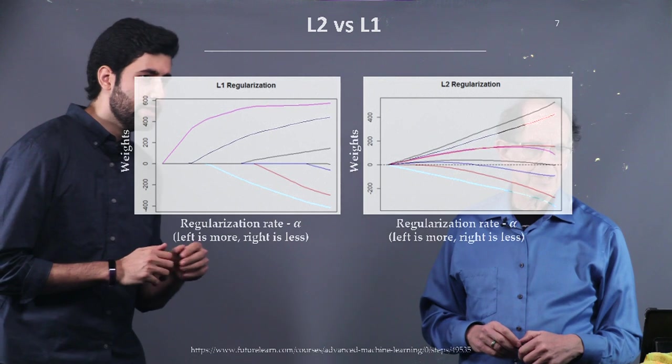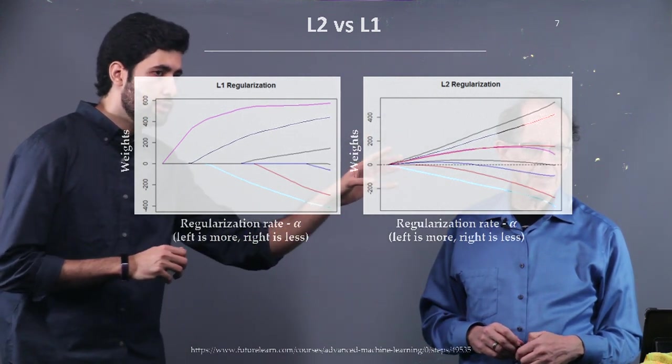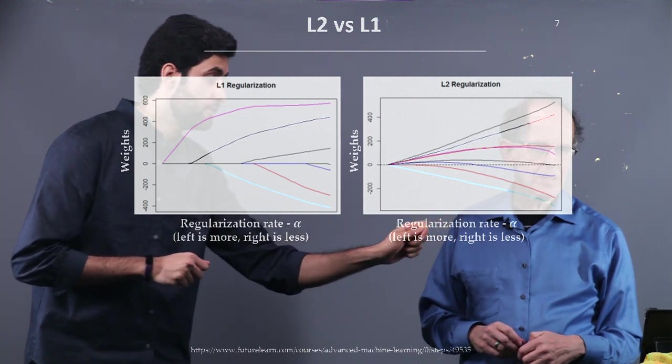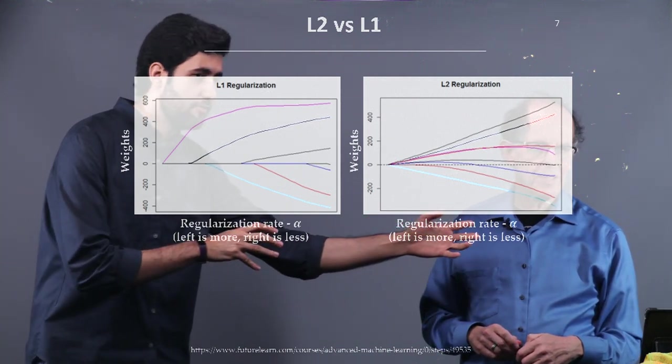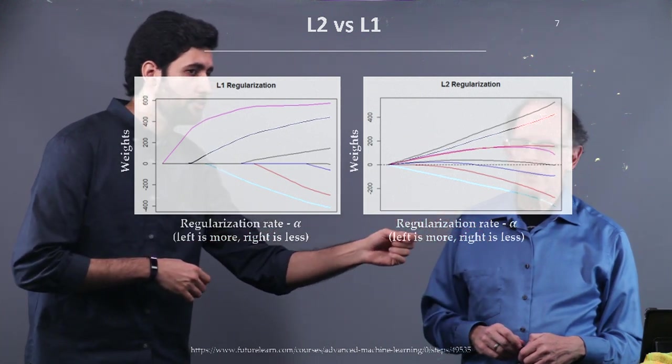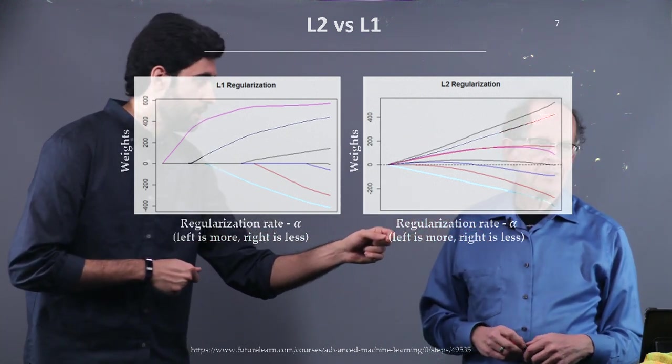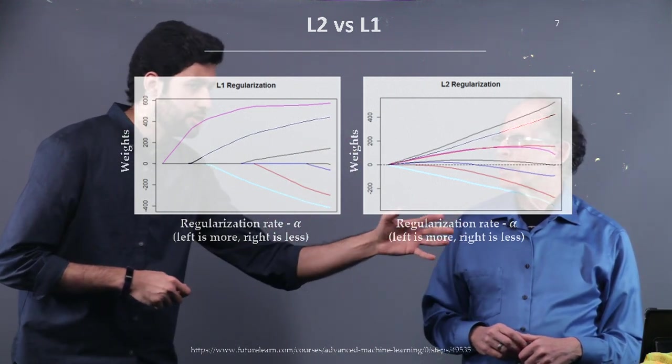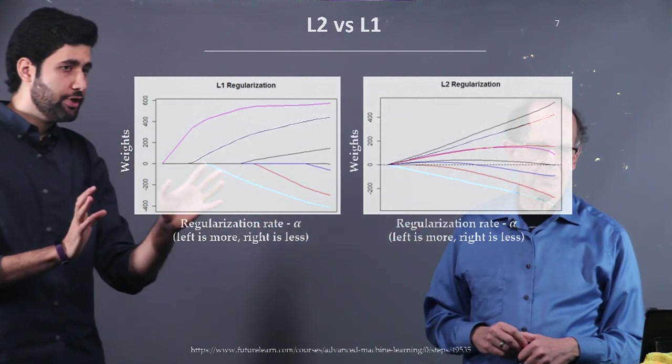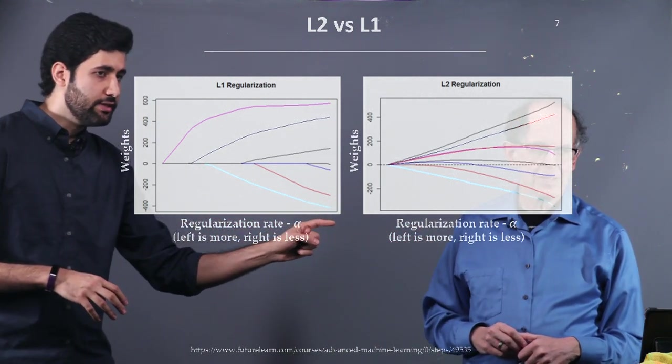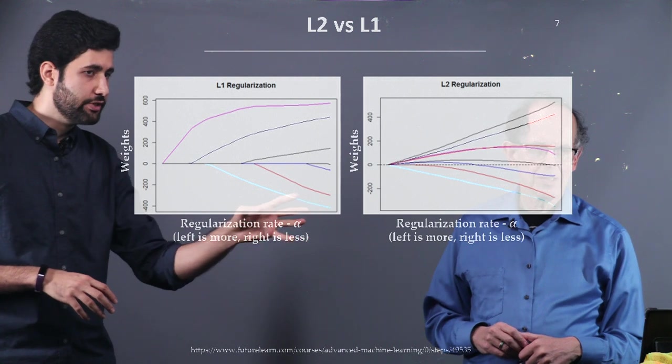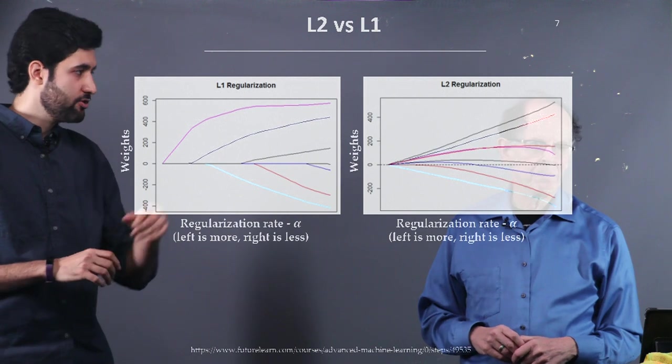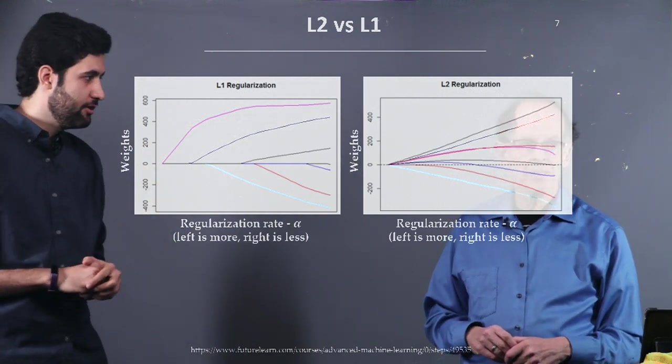As we increase the regularization rate, as we enforce more penalty on the L2 regularization, as we increase the alpha term, we have smaller and smaller weights. But for L1 regularization, we see something like this. The weights decrease, decrease, and go to exactly zero. And then they're stuck there. And then they stop there, because of the curve that we see in the previous slide.